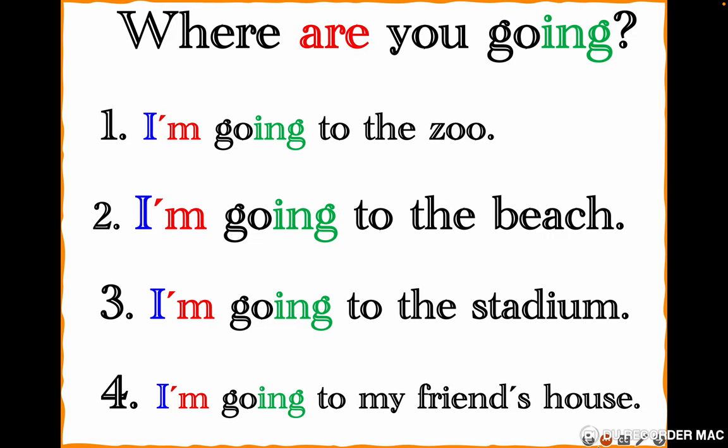Now we have questions with 'where'. 'Where are you going?' This question means now because we have 'are' plus verb plus -ing — verb to be in present simple plus verb plus -ing. Where are you going? — Now I am going to the zoo, now I am going to the beach, now I am going to the stadium, now I am going to my friend's house. Let's repeat: 'Where are you going?' — I am going to the zoo, I am going to the beach, I am going to the stadium, I am going to my friend's house.